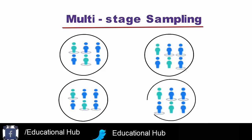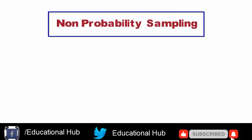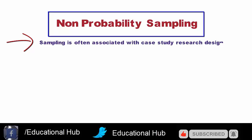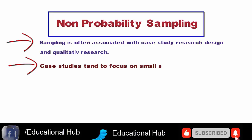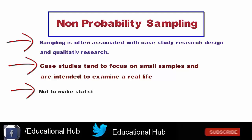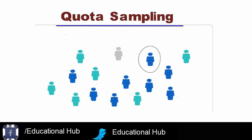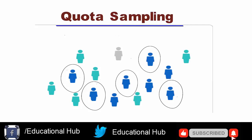2. Non-probability sampling. Non-probability sampling is often associated with case study research design and qualitative research. Case studies tend to focus on small samples and are intended to examine a real-life phenomenon, not to make statistical inferences in relation to the wider population. 1. Quota sampling. Quota sampling is a non-random sampling technique in which participants are chosen on the basis of predetermined characteristics, so that the total sample will have the same distribution of characteristics as the wider population.